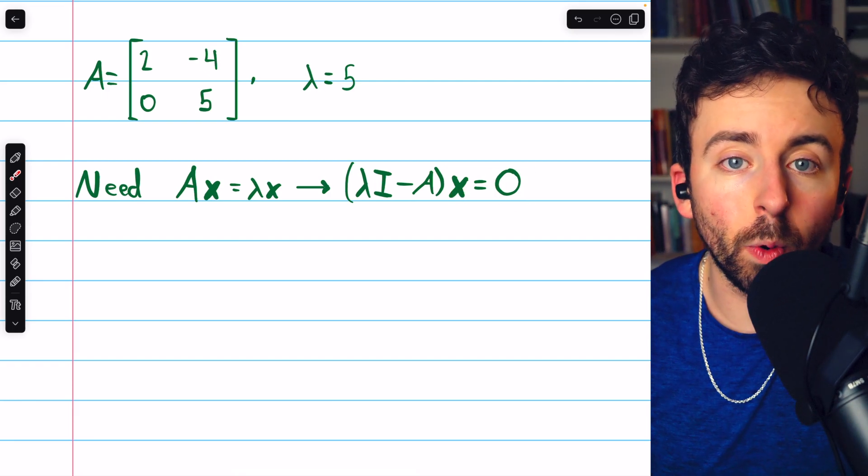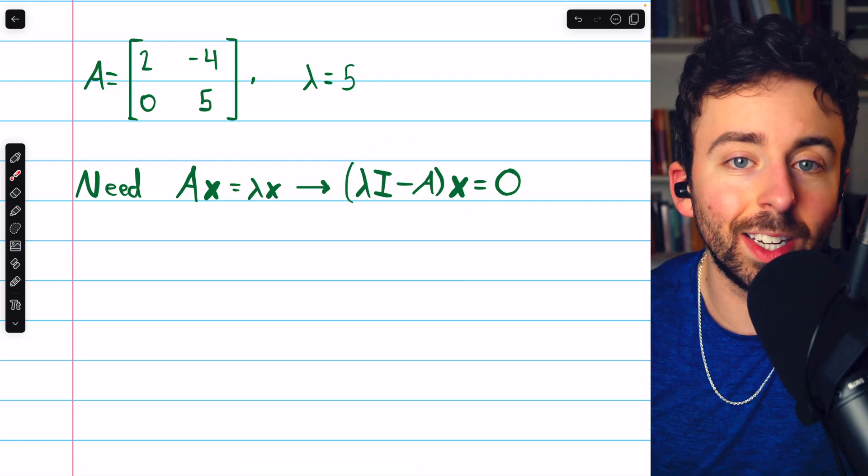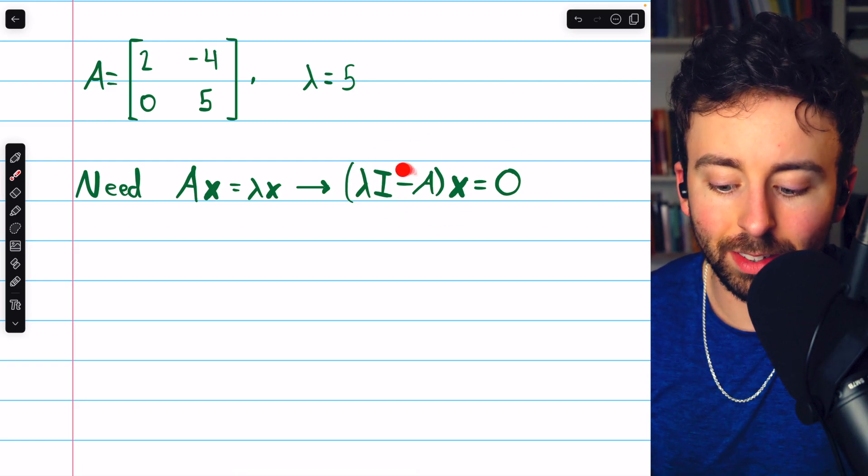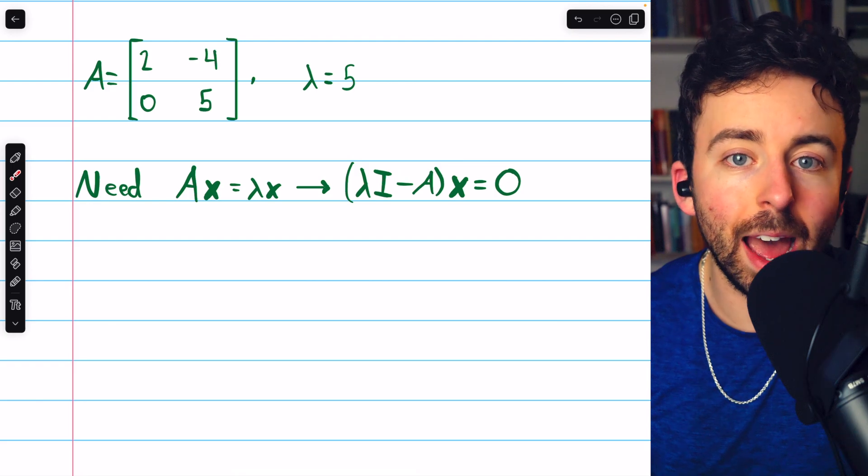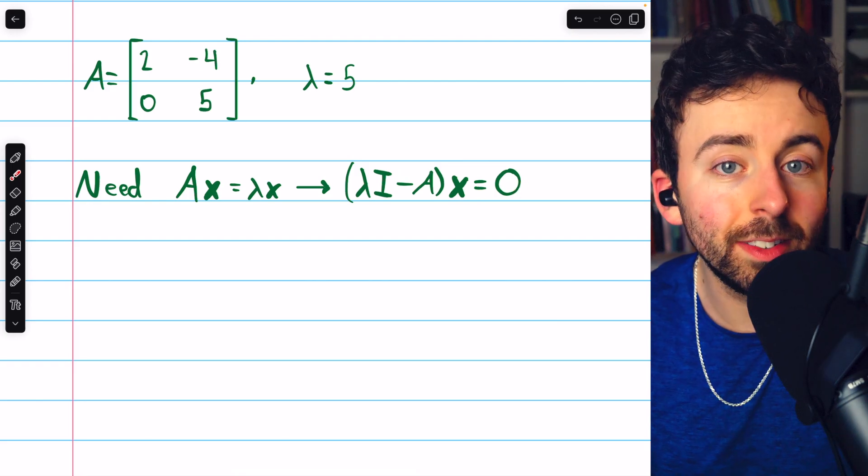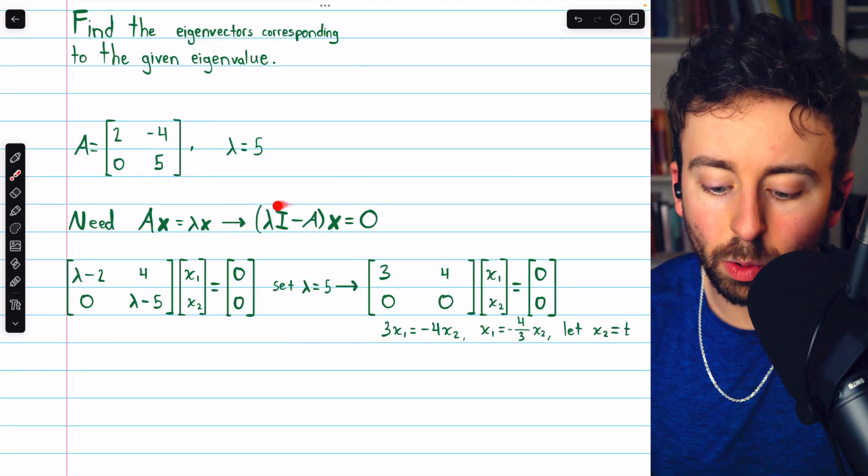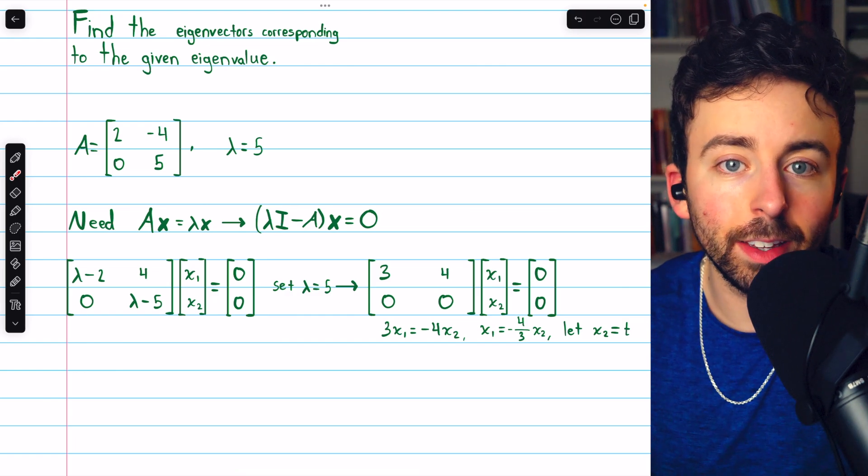And so then we're looking for solutions to a homogeneous linear system. This times a vector x, those are the eigenvectors, has to equal zero. So we begin by just finding what this matrix lambda I minus A is.